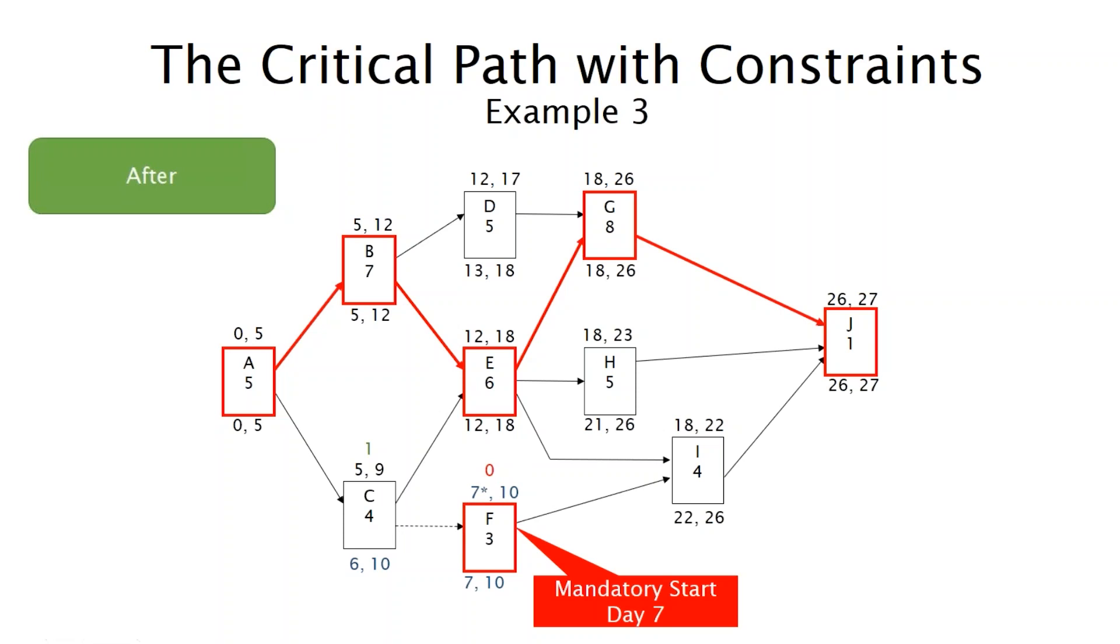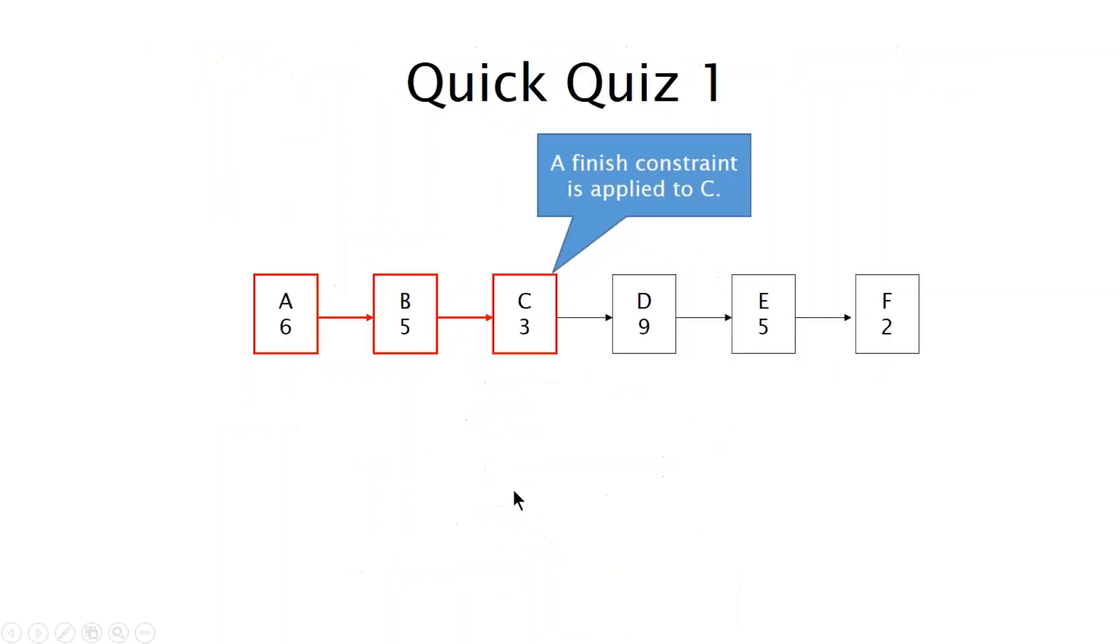So as you can see, all sorts of strange things can happen. So if you've got a lot of these constraints, and you're applying them throughout your schedule, and then you go to do critical path analysis, you can see that it would be difficult to figure out exactly what's going on.